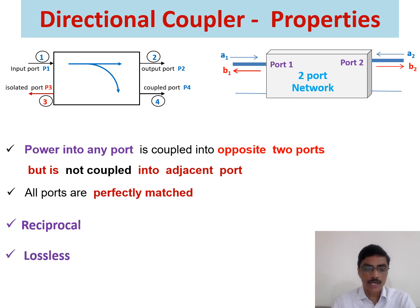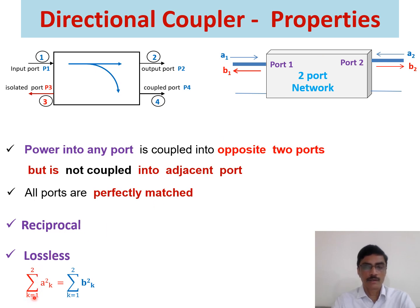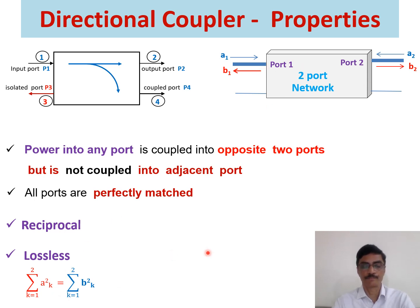The fourth property is lossless. A lossless network means the sum of the powers entering the network equals the sum of the powers leaving the network. This can be expressed mathematically: the summation of |ak|² for k equals 1 to 2 equals the powers leaving the port, that is B1 and B2. This means no power is dissipated inside the network itself.